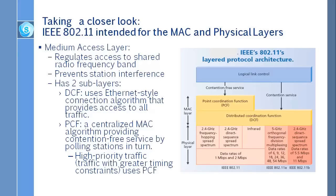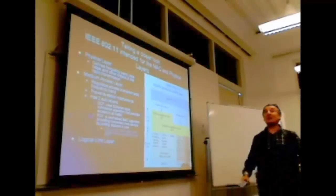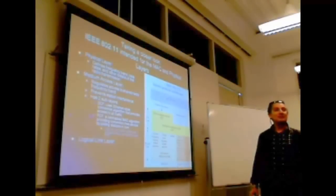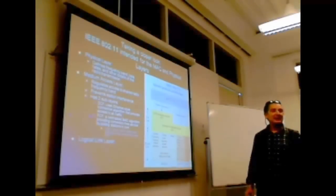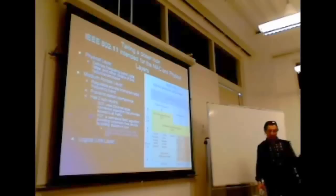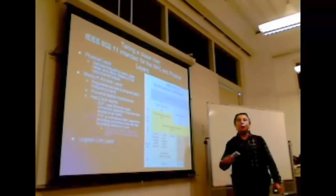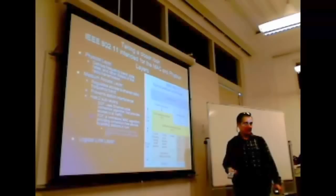DCF uses internet style contention algorithm that provides access to all traffic. You guys tell me, how we are sharing the cable on internet? What is the access protocol? It starts with letter C. CSMA/CD, right? CSMA/CD, collision detection. Carrier sense, multiple access with collision detection.